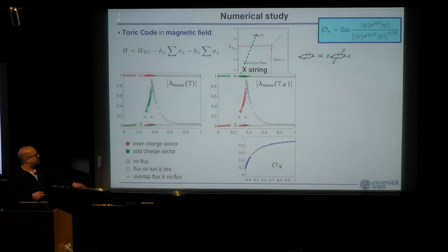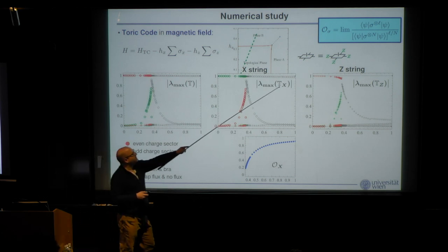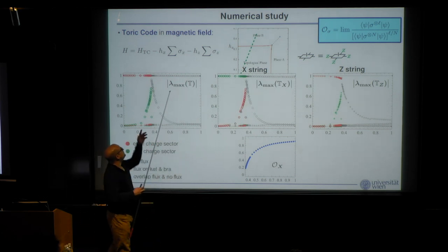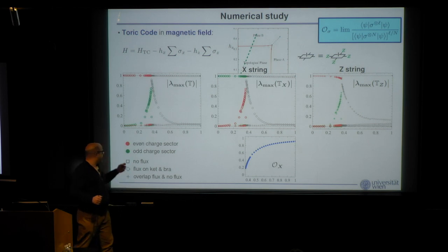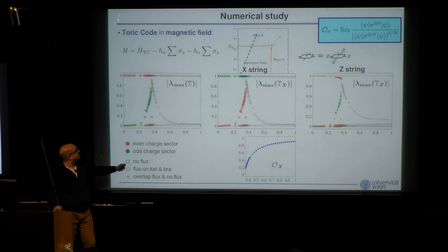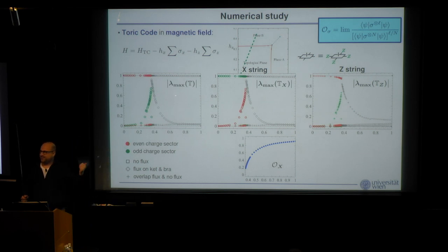Computing the actual order parameter gives a significant signal right away. For Z strings, the relevant label is the flux rather than the charge sector: the leading flux sector differs between the two transfer matrices, so again you get orthogonality and the order parameter is zero up to the phase transition. After the transition, the appropriate matching sector gives a non-zero value. The Z-string order parameter is noisier because its signal comes from a very small eigenvalue of the transfer matrix — something variational simulations are not optimized to capture.